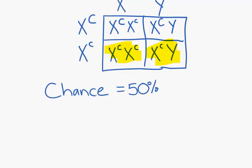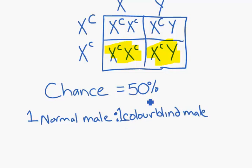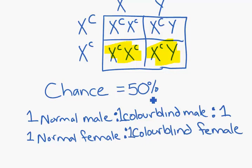So if we were to answer a question about the phenotypes of the offspring, we would be talking about one normal male, one colorblind male, one normal female, and one colorblind female. When we are asked for phenotypes, we have to remember to add in the gender.